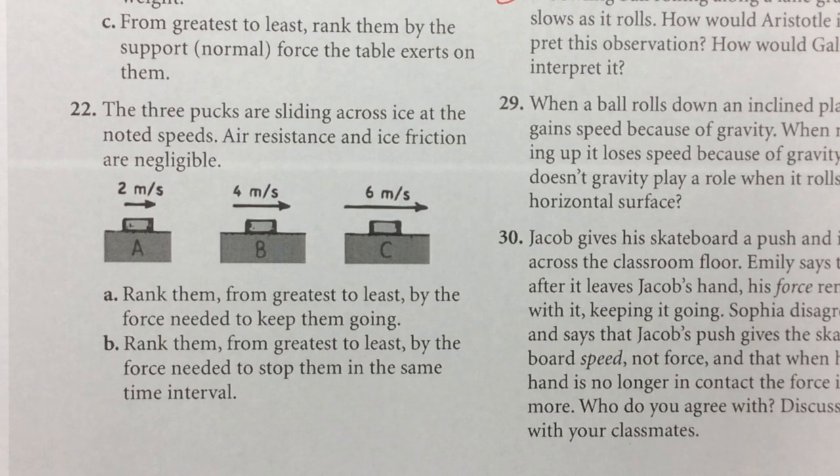So the question says, the three pucks are sliding across ice at the noted speeds. So A is at 2 meters per second, B is at 4 meters per second, C is 6 meters per second. Air resistance and ice friction are negligible, so you can disregard that.